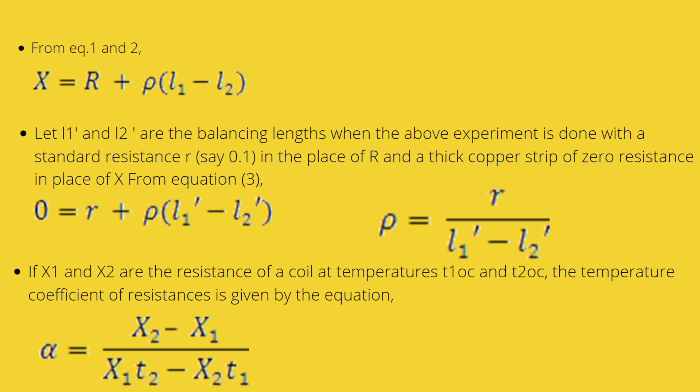Here, rho is the resistivity. If X1 and X2 are the resistance of coil at temperature T1 Celsius and T2 Celsius, the temperature coefficient of resistance is given by equation alpha equals X2 minus X1 divided by X1 into T2 minus T1.